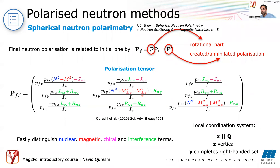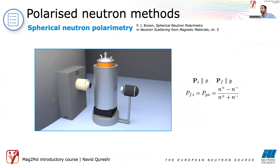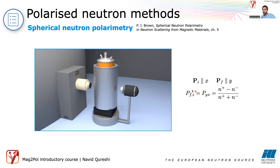When I said selectively measuring cross sections, each polarization matrix element can be individually tested. In this animation showing cryopad as it looks on D3, with the reactor providing neutrons, we measure the matrix element for initial polarization along X — parallel to the scattering vector — and analyze the polarization along Y. The polarization value is calculated as N-plus minus N-minus divided by their sum.